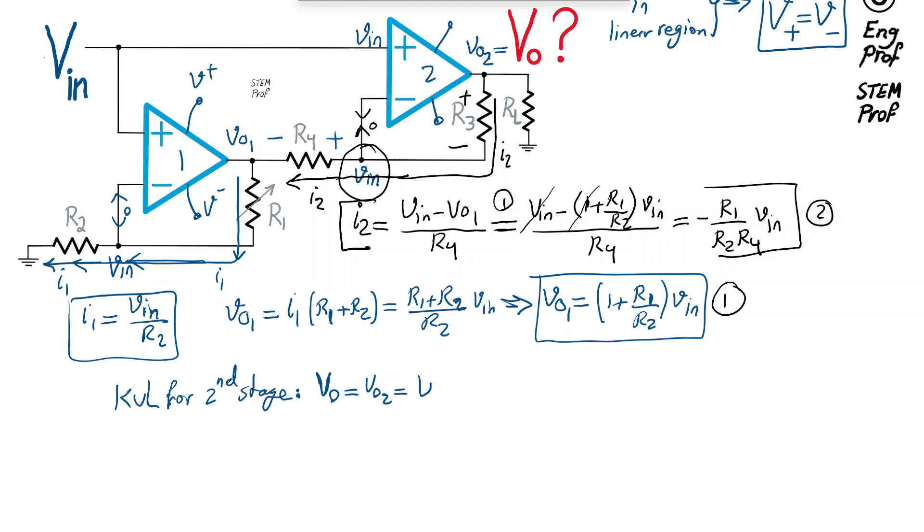V-in is known, and VR3 is simply I2, the current that we just found, times the resistor R3.